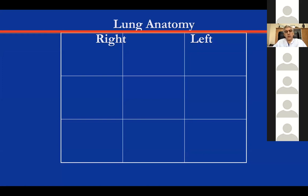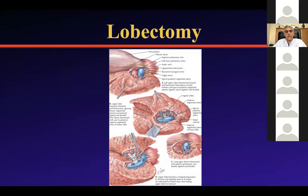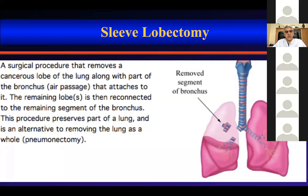Bilobectomy is a modification of standard lobectomy, performed in cases with partial or total interlobar invasion by the tumor. Sleeve lobectomy is a surgical procedure when the tumor invades the main bronchus outside the lobar bronchus — we resect the bronchus with the lobe and anastomose the remaining bronchus with the main bronchus. For example, this is a left lower sleeve lobectomy — the left lower lobe tumor invades the secondary carina and main bronchus. Instead of pneumonectomy, we perform lobectomy with resection of the secondary carina and anastomosis of the upper lobe to the main bronchus.